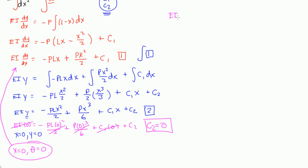We have EI times dy dx, and dy dx, remember, is equal to your slope. 0 is equal to negative PLX, x is 0, plus P0 squared over 2 plus C1. So, if this is 0, this is 0, and this is 0, that means C1 is equal to 0. So, constant 1 is equal to 0, and constant 2 is equal to 0.